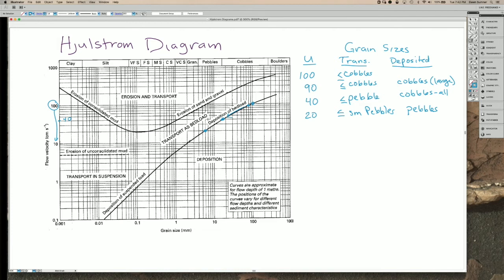When we finally get down to 10 cm a second, for example, then we have very coarse sand being transported and everything larger than that being deposited to be, for example, granules.